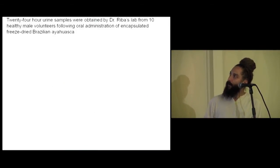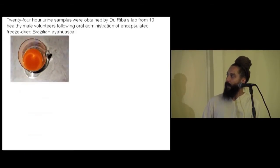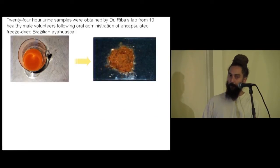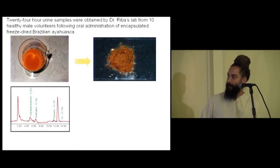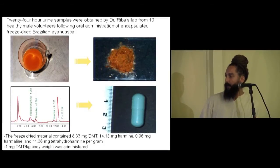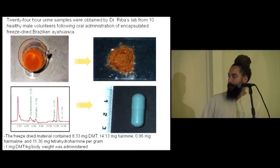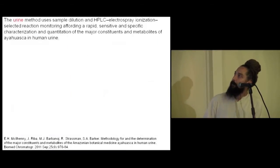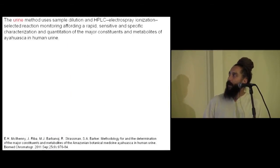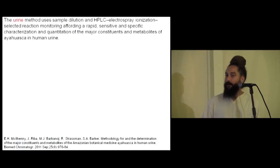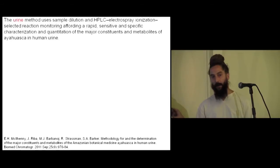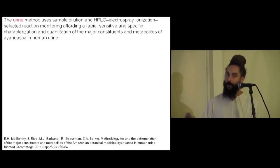So we got these urine samples from Dr. Jordi Reber — 10 of them. He was using a freeze-dried form, which allows for double-blind placebo-controlled studies. This is a chromatogram — this is the kind of output we get from these chemistry analyses. It contains a pretty high dose of harmine and a pretty average dose of DMT. The urine method uses high-pressure liquid chromatography, electrospray ionization, selected reactive monitoring — a really good method that people can send us samples and we can run them quickly and get data back, hopefully leading to clinical trials.